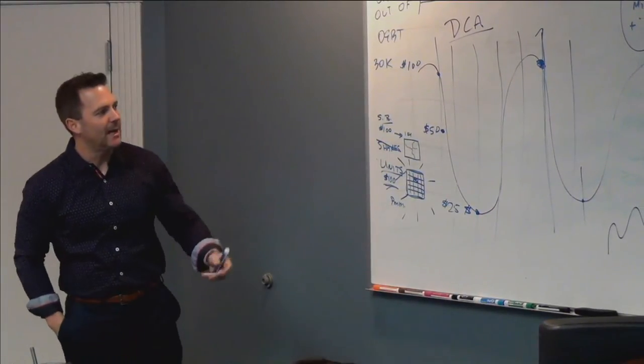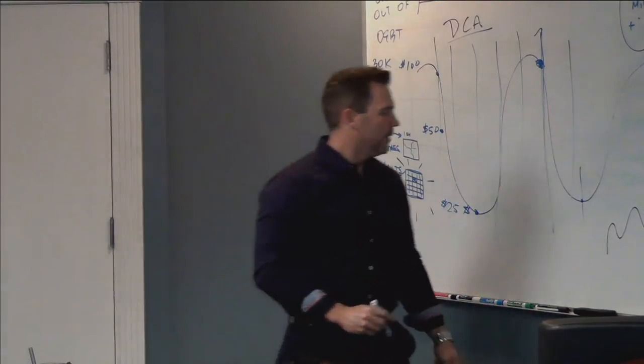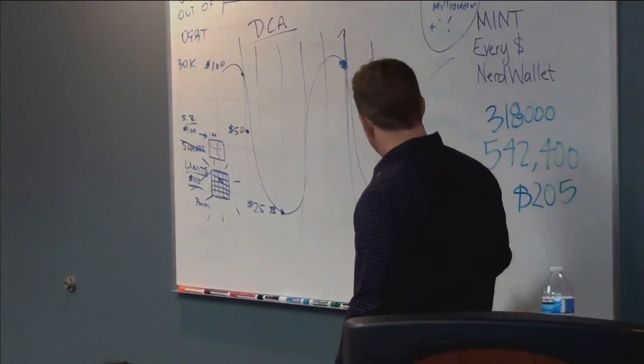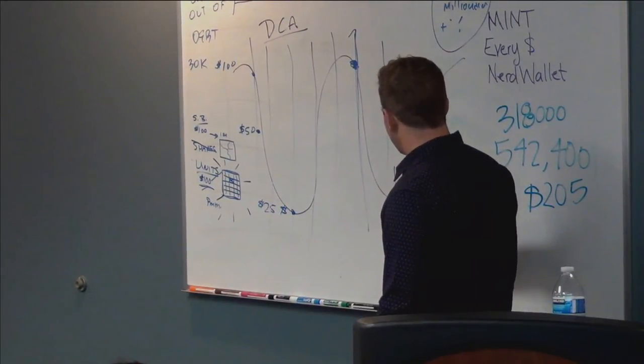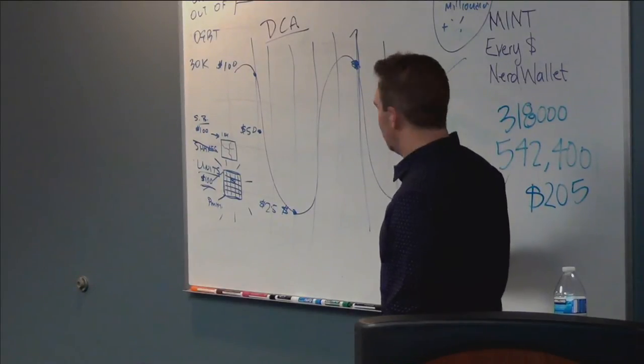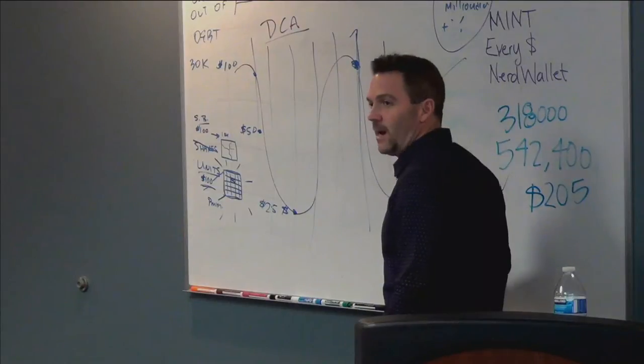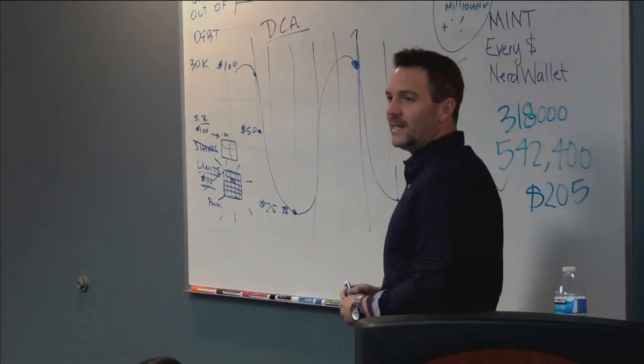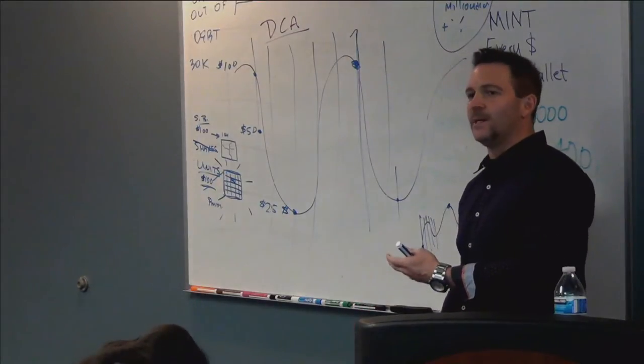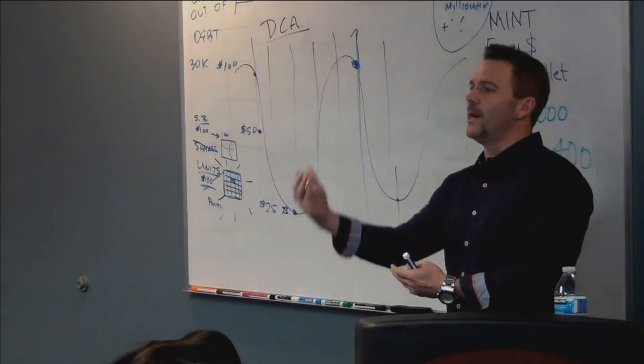And so over time, the reason this is valuable is you've purchased all these units down here. Well, over time, the units that you bought at the very lowest point that were once worth $25 now are worth what? $150. That's where you really get the substantial amount of growth is when you buy something at a depreciated value, at a lower value, that then appreciates over time.